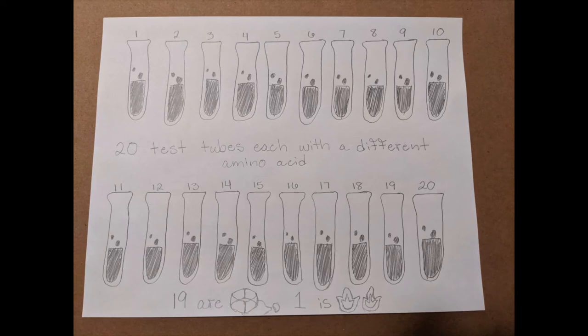Next, the researchers filled 20 test tubes each with a different amino acid. 19 of these tubes were cold and one was hot. The hot means that it is radioactively tagged which allowed the amino acid to be tracked. For each round of the experiment, the hot amino acid varied. This variation allowed them to see which amino acid would be changed into a protein.